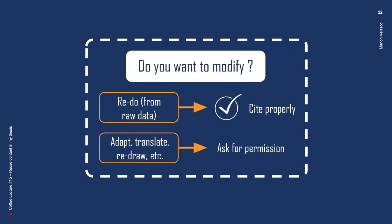Do you want to modify the content before reusing it? There is a difference between redoing the content identically from raw data and modifying, adapting, or redrawing it. Since raw data are not protected by copyright, a figure or image can be redone without permission from the raw data used to produce the original. However, redrawing, modifying, or adapting implies not only reuse of the original work but also the creation of a derivative work. In this case, authorization from the rights holder of the original work is required, unless the original content has been released under a Creative Commons license that enables modifications.